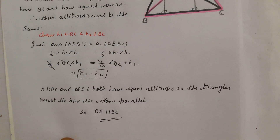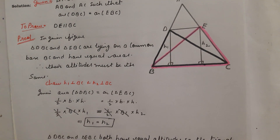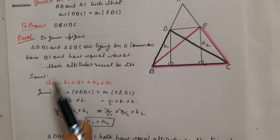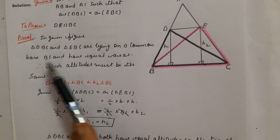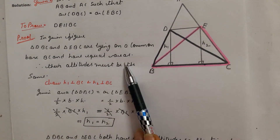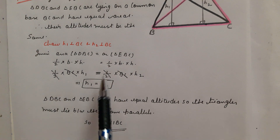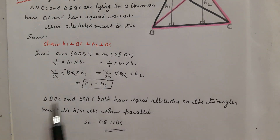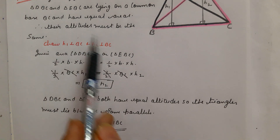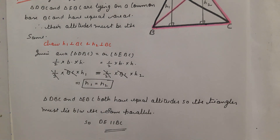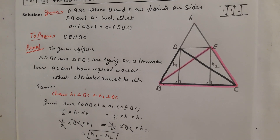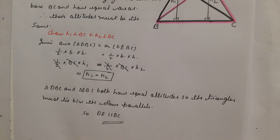We have solved this question. To summarize: the base is common, the areas are equal, so the altitudes are the same, and therefore DE is parallel to BC — the lines lie between the same parallels. I hope you have understood the question. If you have any doubt, please comment in the comment box.